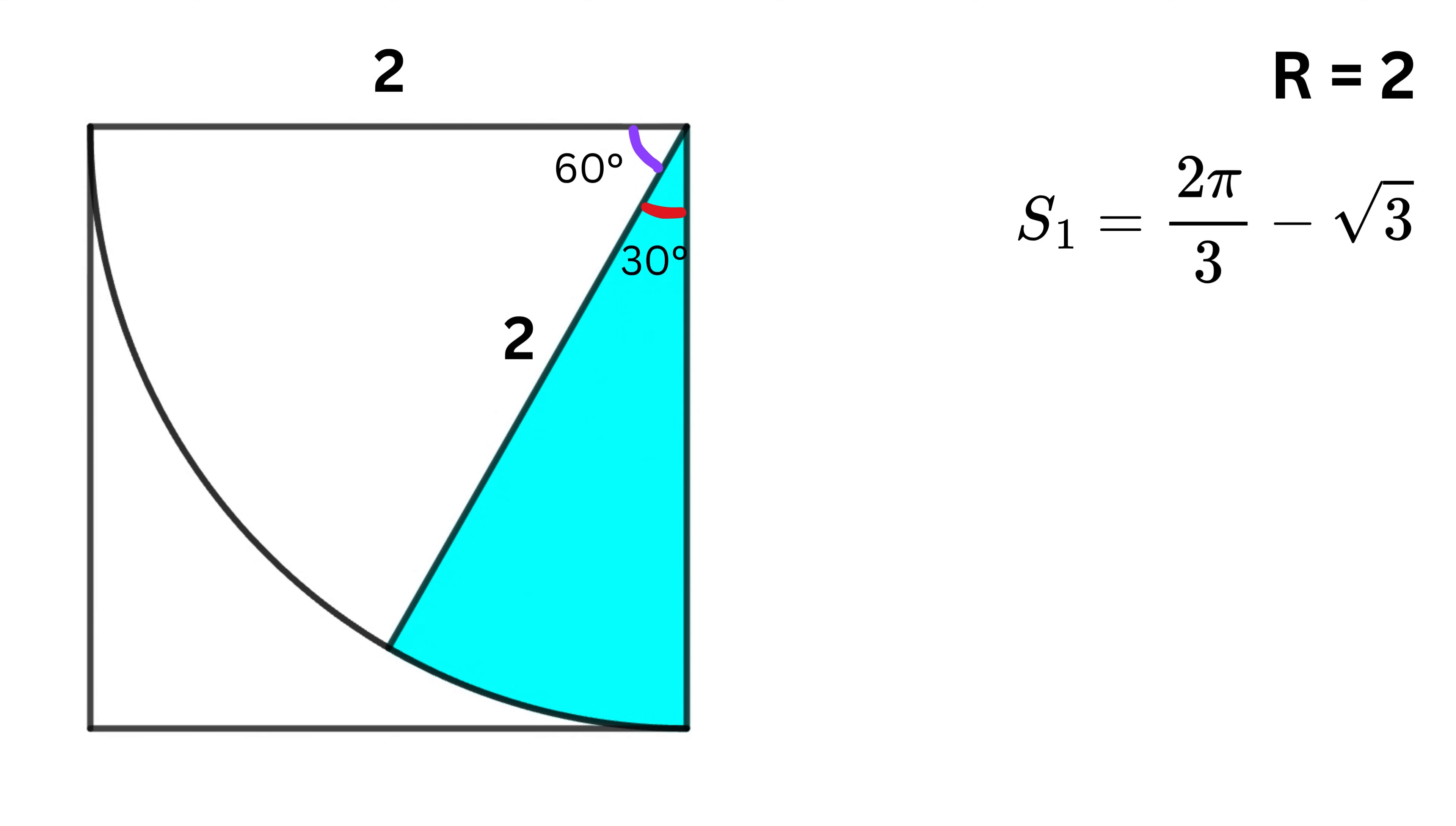Now look at the whole sector defined by this new 30-degree angle, or this region which we will call s2. Again, 30 degrees is just one-twelfth of 360 degrees, so the area of this sector is one-twelfth of the whole circle's area, or π times 4, which simplifies to π/3.